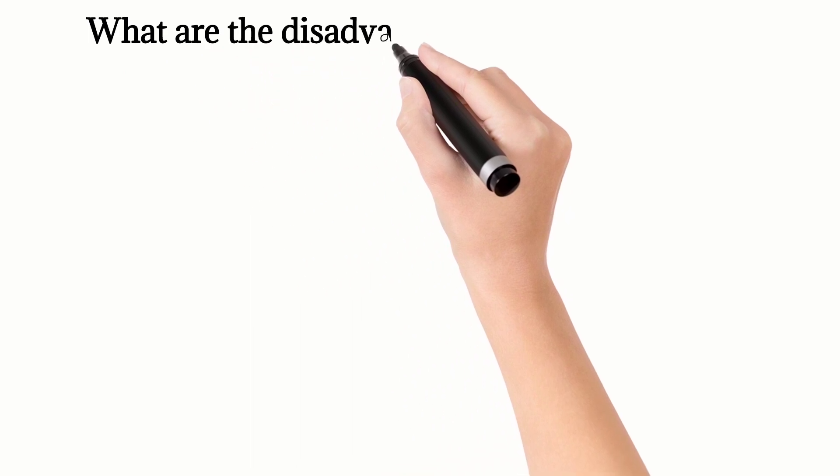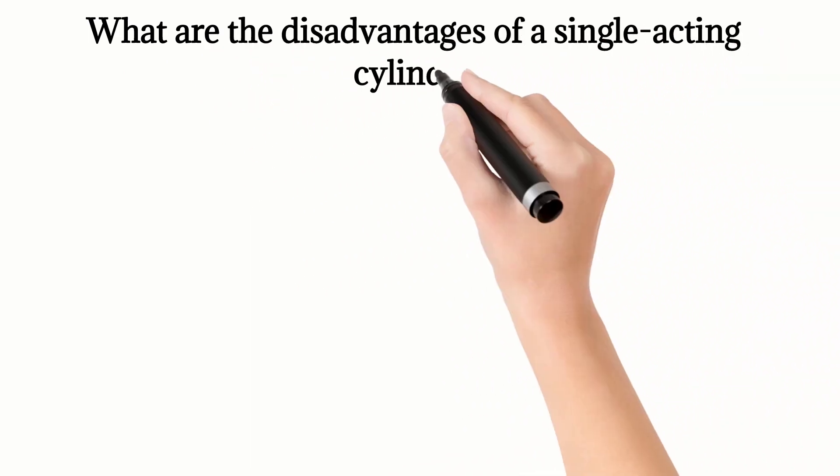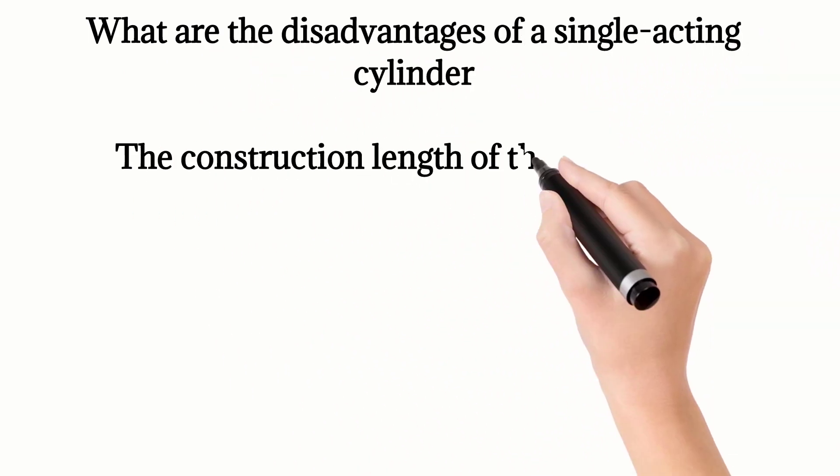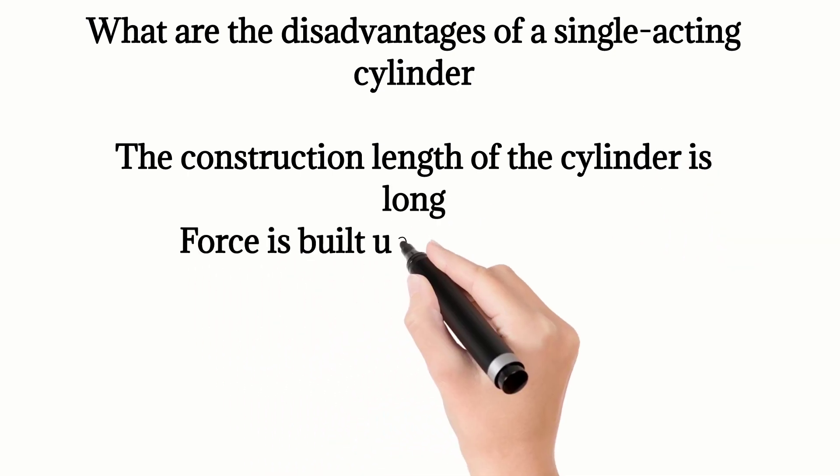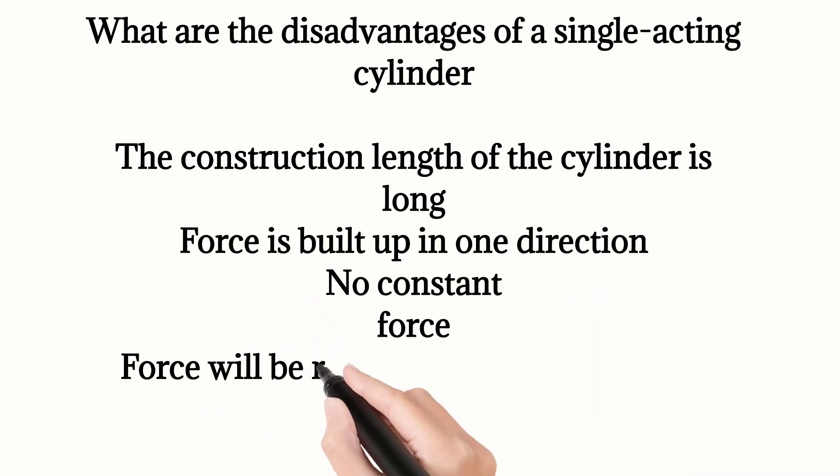What are the disadvantages of a single acting cylinder? The construction length of the cylinder is long. Force is built up in one direction. No constant force. Force will be reduced by the spring force.